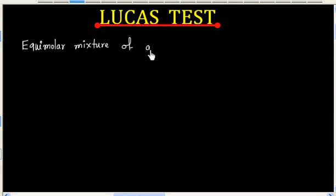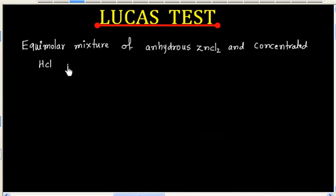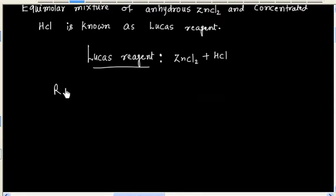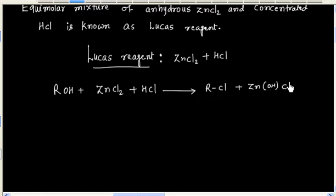Equimolar mixture of anhydrous ZnCl2 and concentrated HCl is known as Lucas Reagent. Alcohol reacts with Lucas Reagent and forms alkyl halide. We will also have an inorganic product.